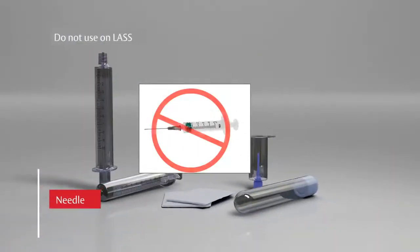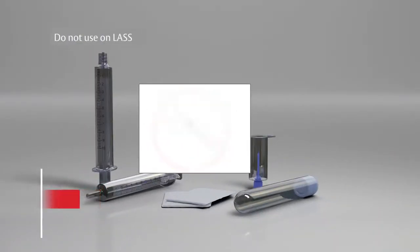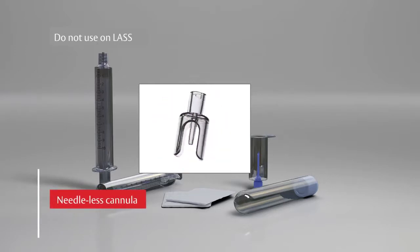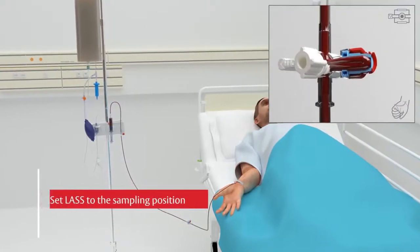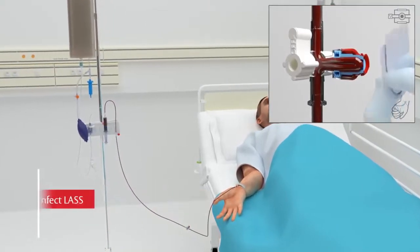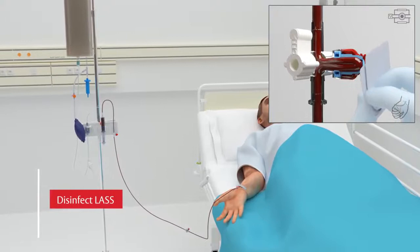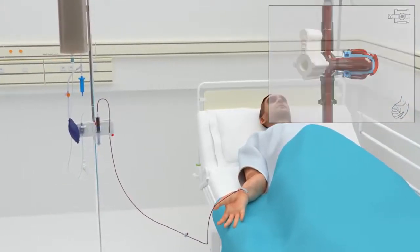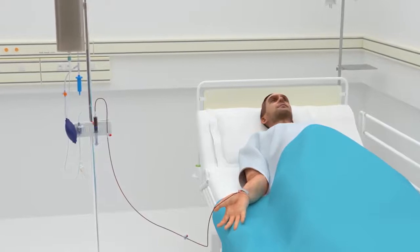Use a needle or needleless cannula through the sample site. Always use a standard lure tapered fitting when inserting into a sample site. Set the sample site to the sampling position. Disinfect the sample site per hospital policy. We will now go through two methods for drawing blood samples: the syringe method and the direct draw method.